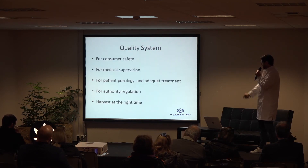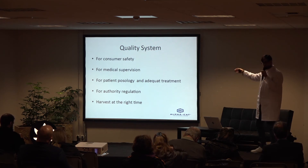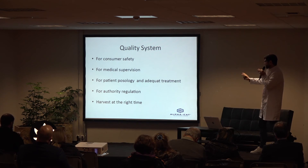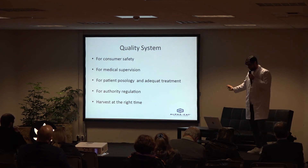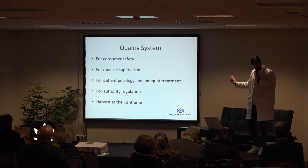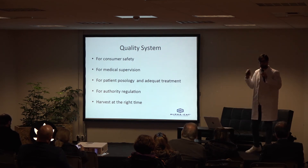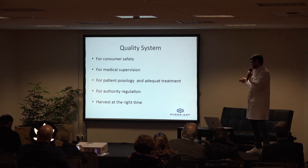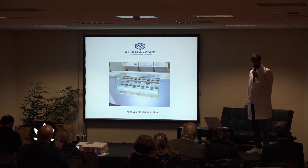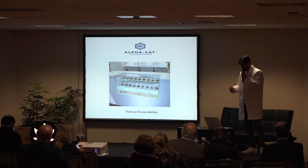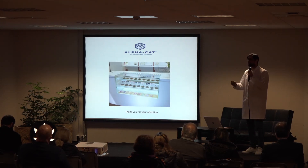So the quality system is for consumer safety, medical supervision, patient pathology, adequate treatments — it can help authority regulators, and of course also help cultivators know the right time for harvesting. Thank you for your attention. If you have any questions, feel free — we have time.